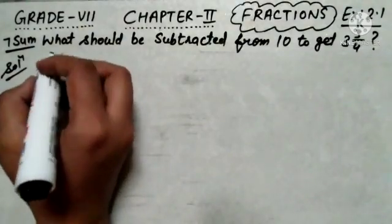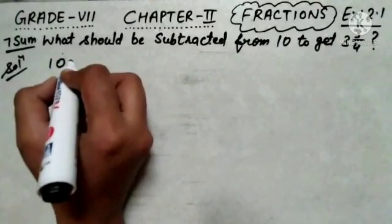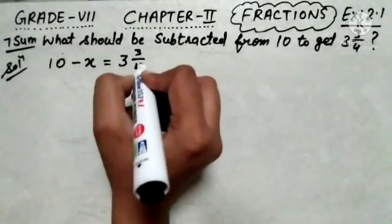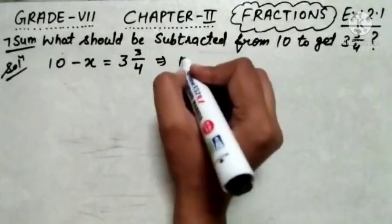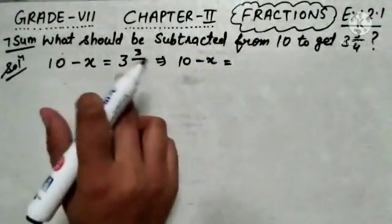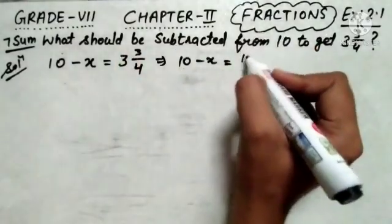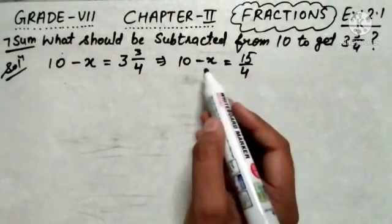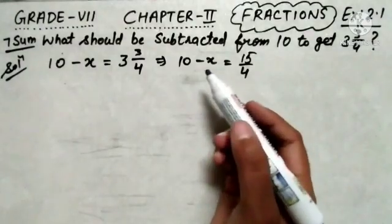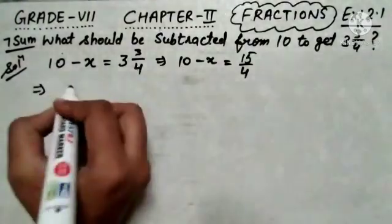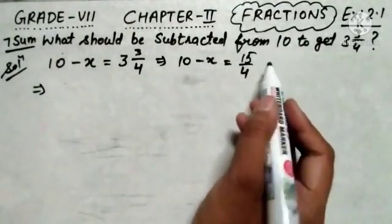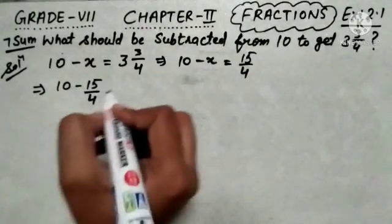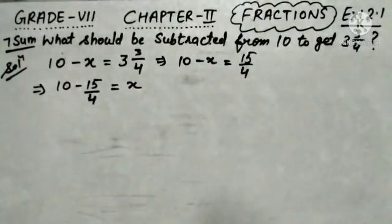That means what we have to subtract from 10. If I subtract x from 10, the remaining term will be 3 and 3 upon 4. In the first step let's convert this value into an improper fraction: 4 times 3 is 12, plus 3 is 15, so 15 upon 4. So 10 minus x equals 15 upon 4. Now let me shift x to the right-hand side so it becomes positive, and shift 15 upon 4 to the left: 10 minus 15 upon 4 equals x.